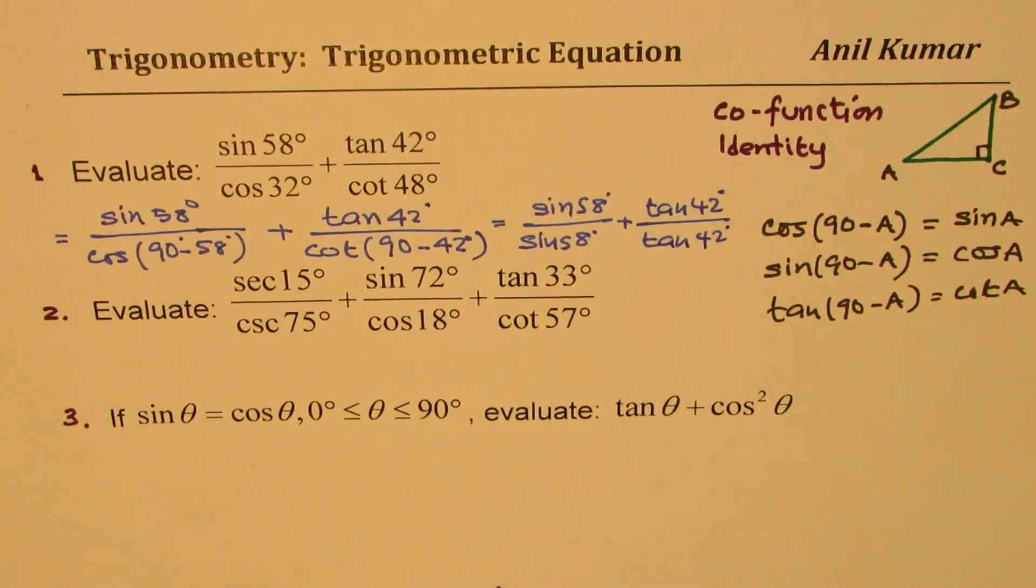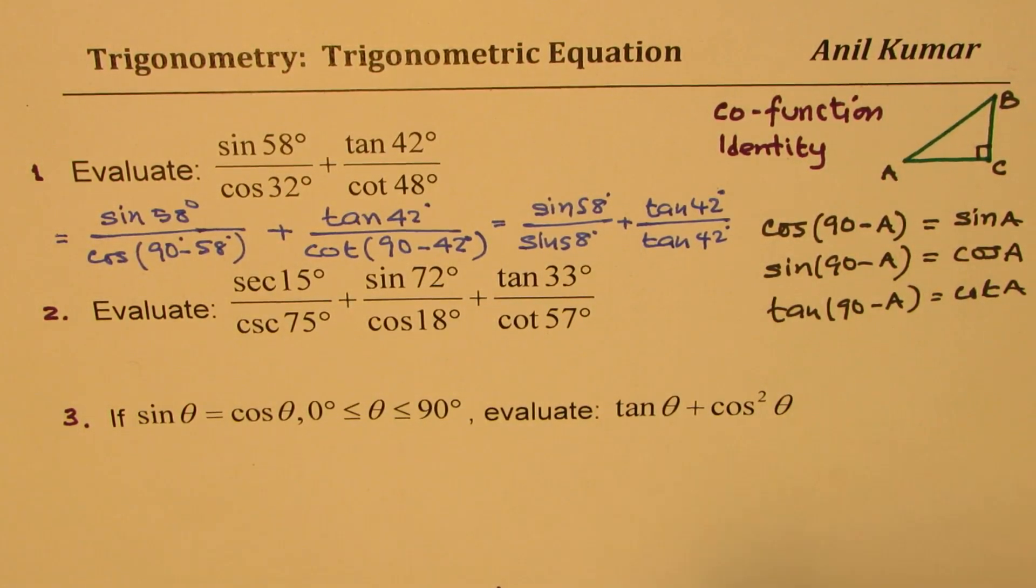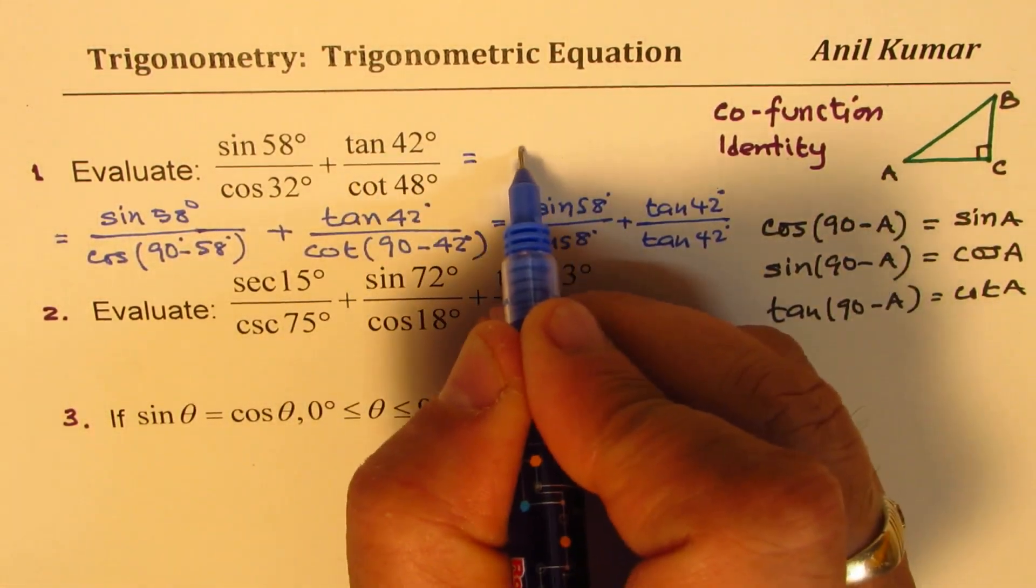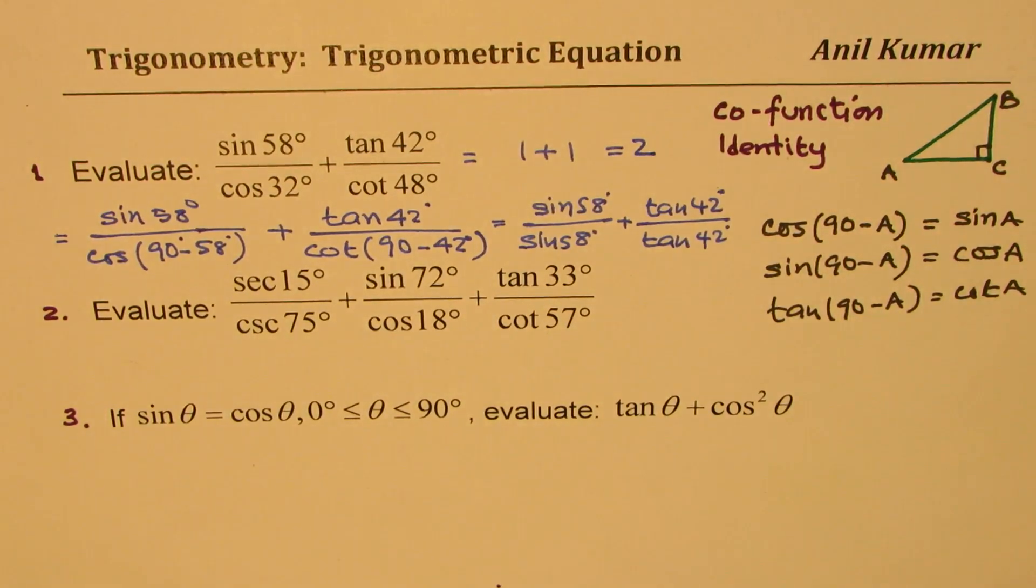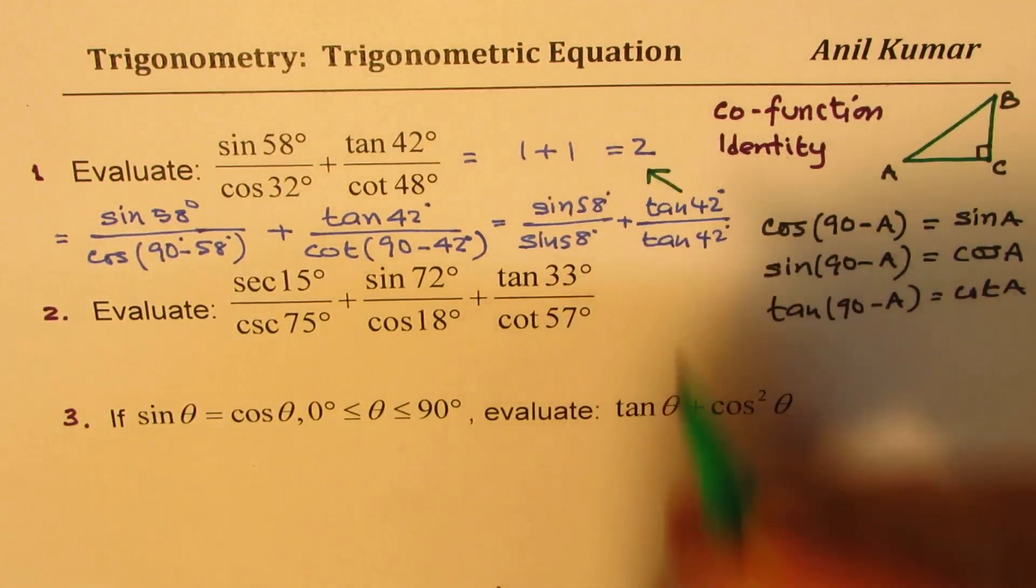So that is clearly 1 plus 1, which is 2. So from here, we can write this actually is equal to 1 plus 1, which is 2. So that is how you could do it. So from here, we can get the result.